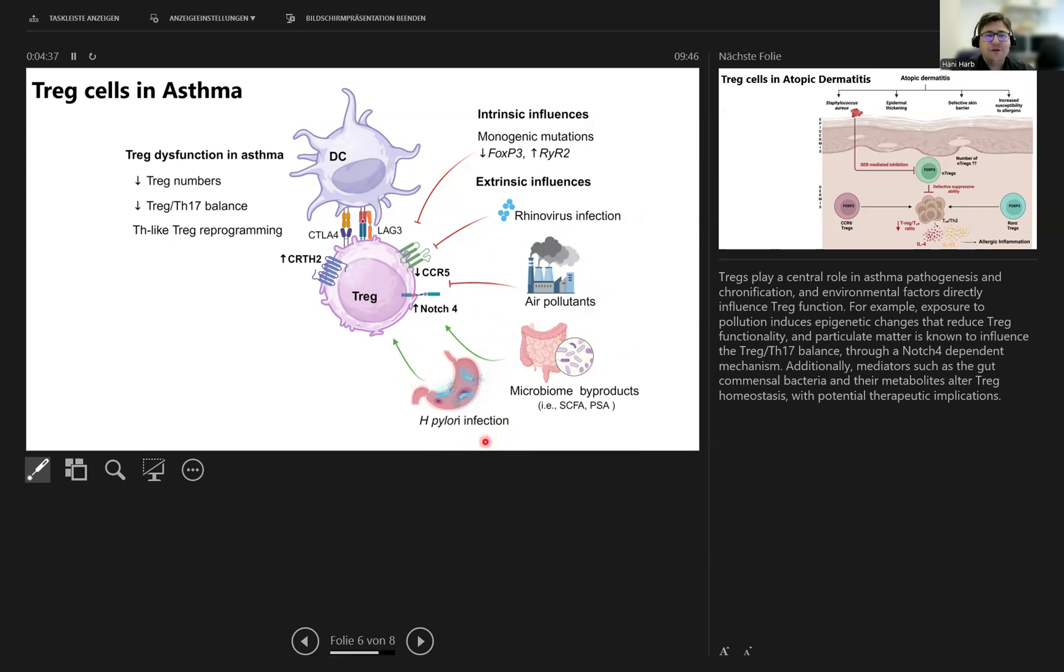They influence the T-reg to T-17 balance through a Notch-4-dependent mechanism, as we have shown before. Additionally, mediators such as gut commensals and their metabolites alter T-reg homeostasis with potential therapeutic implications in asthma.